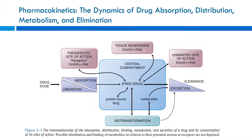The four key components of kinetics are absorption, distribution, metabolism, and excretion. When a drug dose is given, it has to get liberated — whether it's a tablet dissolving in the stomach that gets absorbed or an IV fluid administered directly into the veins. It has to get into the system somehow; that's absorption. From there, it partitions out into the tissues, and then there's metabolism and excretion.